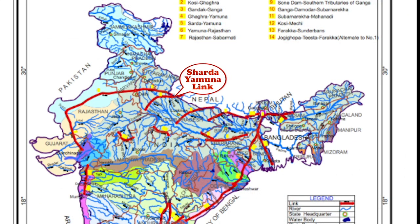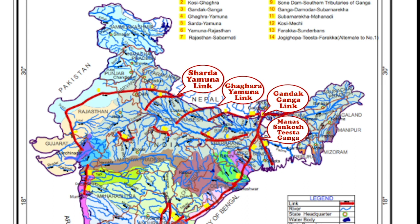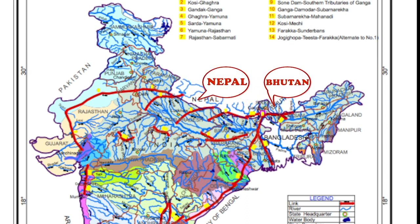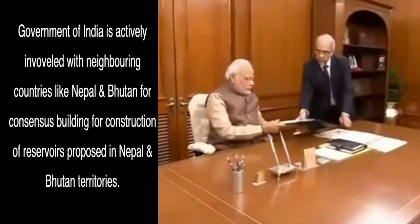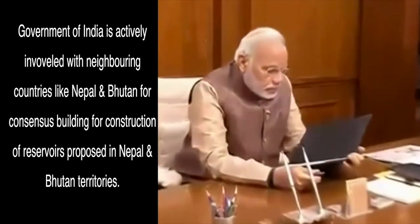Most of the reservoirs and ILR projects planned under the Himalayan component — such as the Sharda-Yamuna, Ghaghra-Yamuna, Gandak-Ganga, and Manas-Sankosh-Tista-Ganga links — are proposed in neighboring countries of Nepal and Bhutan. The Government of India is actively involved in consensus building with these countries, and a joint agreement between Nepal and India on the Mahakali river for construction of the Pancheshwar Dam has already been signed.